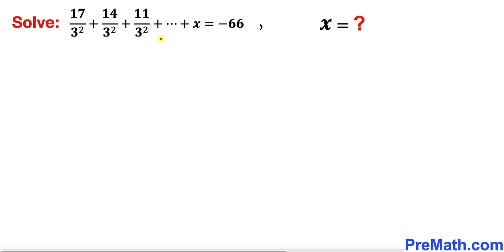Let's get started with the solution. As we can see in this equation, the denominator 3 squared is the same as 9. Likewise, this 3 squared is 9 as well. This is 9, and it keeps going — we're going to have a 9 in the denominator throughout.